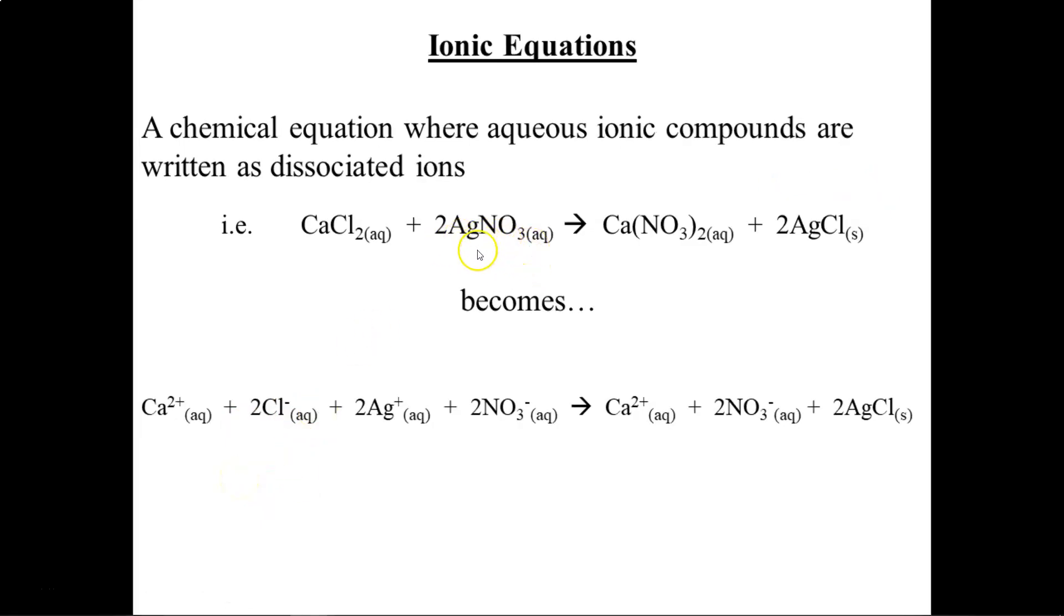The same goes for silver nitrate. Notice how there's 2 of these silver nitrate molecules, so when they dissociate we release 2 silver ions and 2 nitrate ions. Meanwhile calcium nitrate releases 1 calcium ion and 2 nitrate ions.